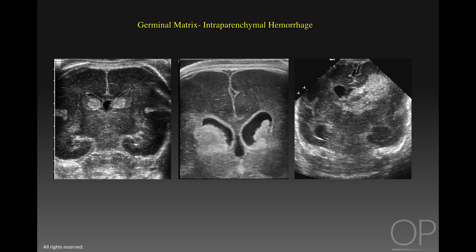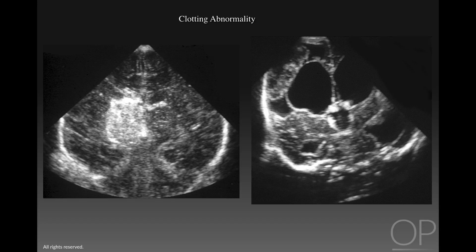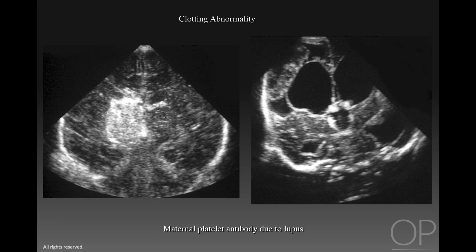Hemorrhages in term and near-term infants are often different in location, cause, and appearance. Here are two near-term infants with a clotting abnormality. The infant on the left side has a brightly echogenic thalamic hemorrhage. The infant on the right has post-hemorrhagic hydrocephalus and a moderately echogenic clot in the parietal region. Both infants were born to mothers who had lupus and had platelet antibodies.